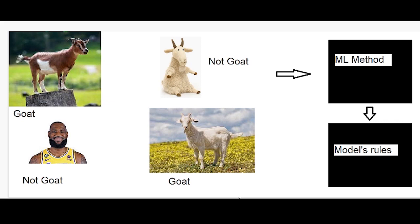So what even is machine learning? Well, machine learning is basically computers learning the solution to a problem by applying algorithms to the data that they are given, rather than being directly told what they are supposed to do with it.